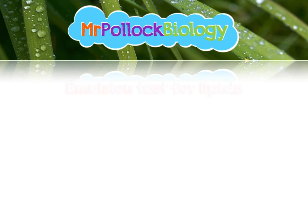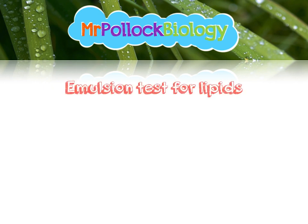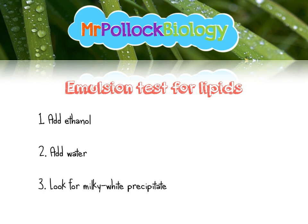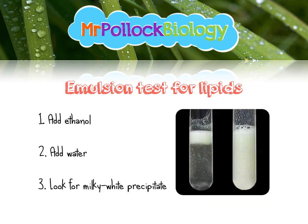Finally, we have the emulsion test for lipids. If you've got a sample that you think contains lipids, fats, or oils, you're going to add some ethanol, give it a mix, then add some water. You're looking for an emulsion — the examiner likes a milky white or cloudy white precipitate. Here we have the negative result on the left where it's formed two distinct layers, and on the right a positive result where it's formed the emulsion or a milky white precipitate.